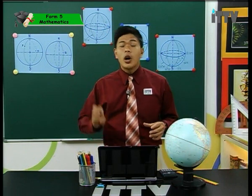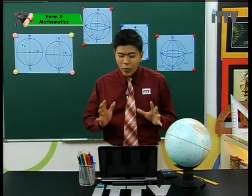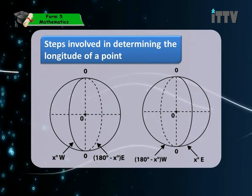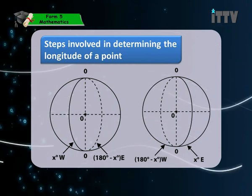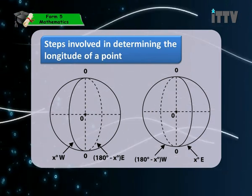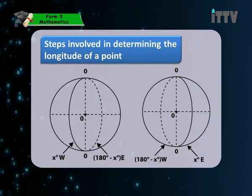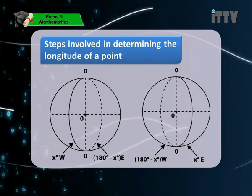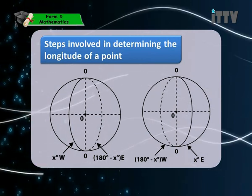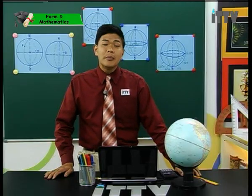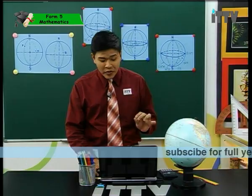There is a special case: if one meridian has longitude X degrees west, the other half of the same great circle will have longitude (180 minus X) degrees east. Similarly, if a meridian is X degrees east, the opposite meridian will be (180 minus X) degrees west. This applies when both meridians together form a great circle — knowing one longitude allows you to find the other.